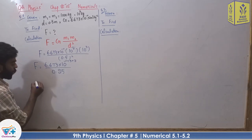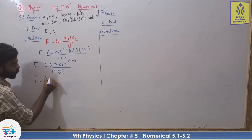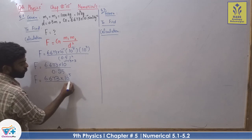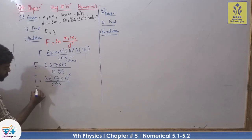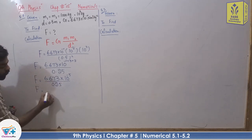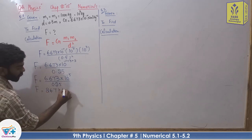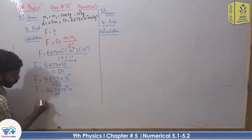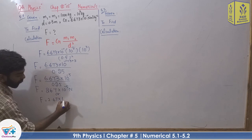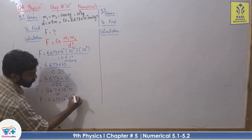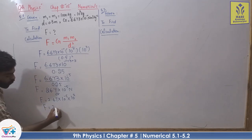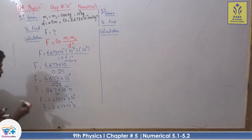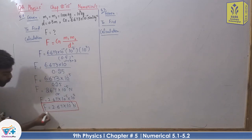This gives 6.673 multiplied by 10 raised to the power of minus 5, divided by 0.25. Solving: 6.673 divided by 0.25 gives 26.7. Multiply by 10 raised to the power of minus 5 Newton. After rounding off: 2.67 multiplied by 10 raised to the power of minus 4 Newton.